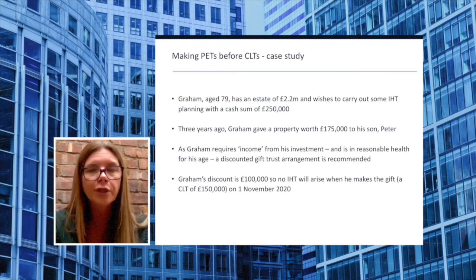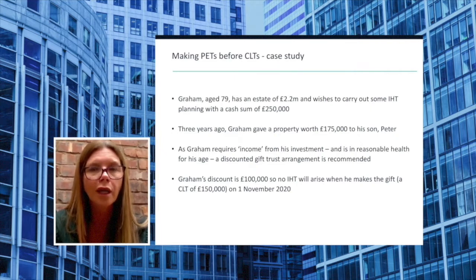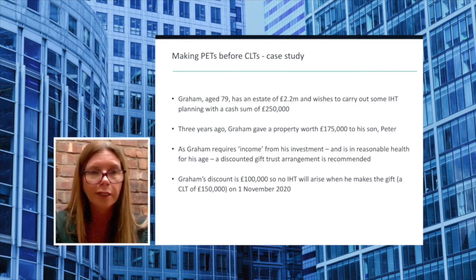Because Graham's earlier gift was potentially exempt, he has a full nil rate band available to him when he sets up his discounted gift trust, and so no lifetime charge to inheritance tax will arise when he makes his discounted gift of £150,000 on the 1st of November 2020.